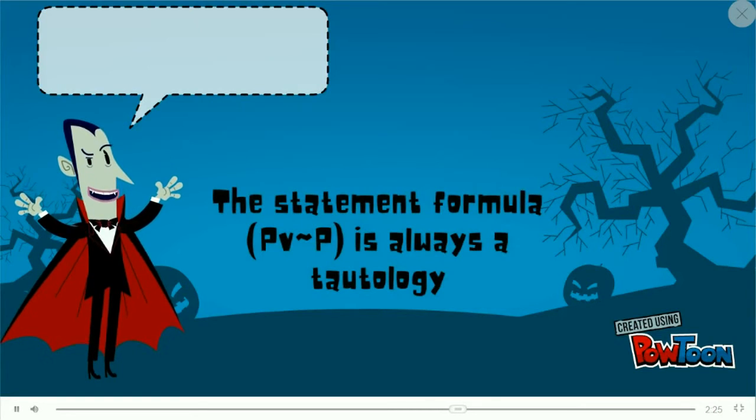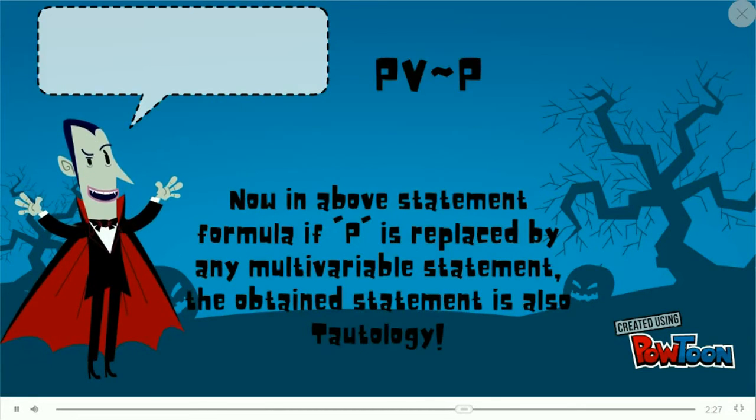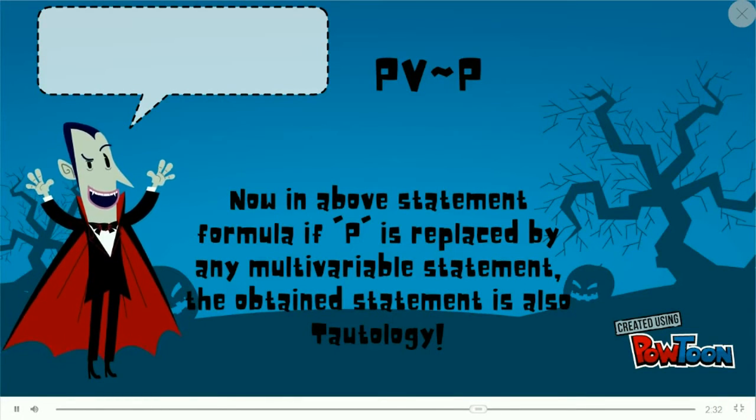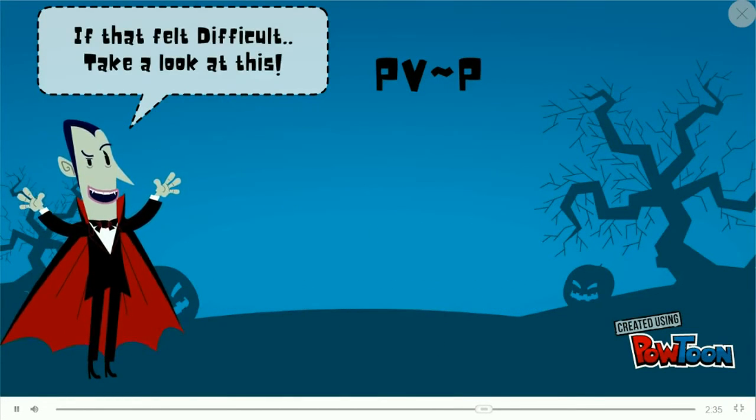Let's take an example. Here, P or negation P. If P is replaced by any other multivariable statement, the value still remains to be true. That's tautology.